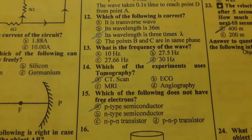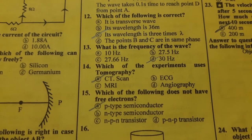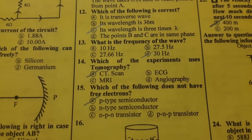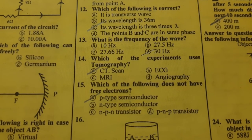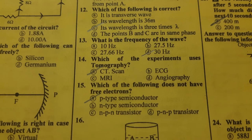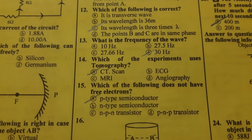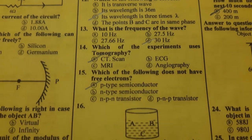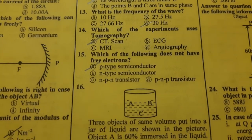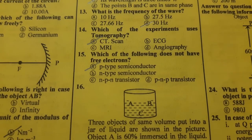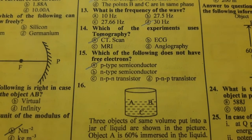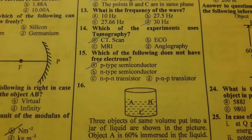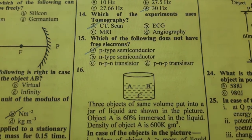Question number fourteen: which of the following experiments uses tomography? The answer is option A — CT scan. Question number fifteen: which of the following does not have free electrons? The answer is option A — P-type semiconductors.